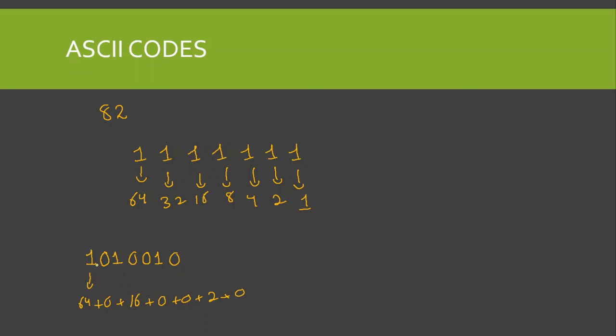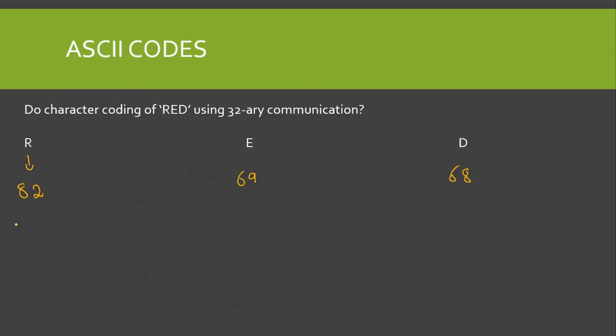So the binary value for 82 is 1010010. One letter is now done.